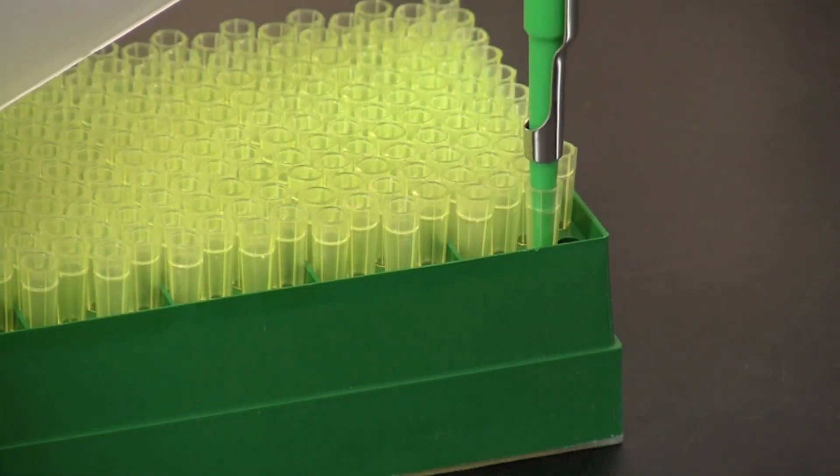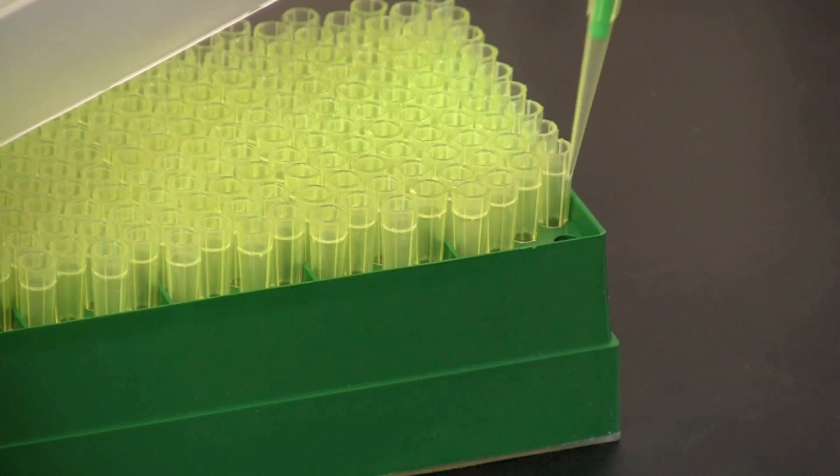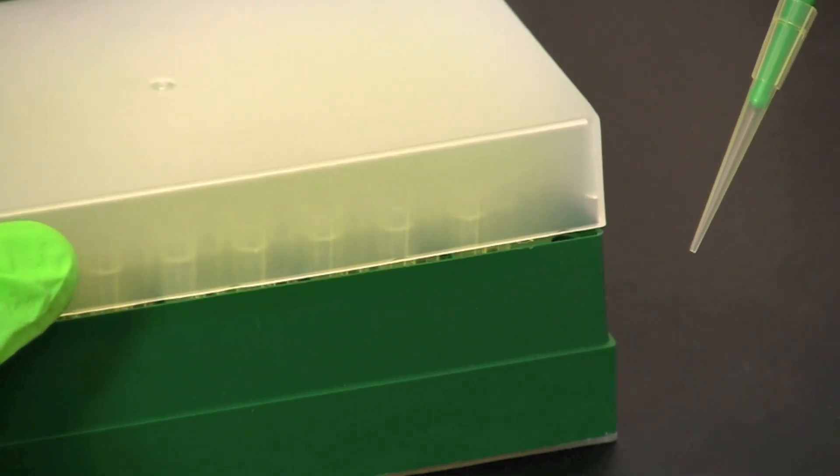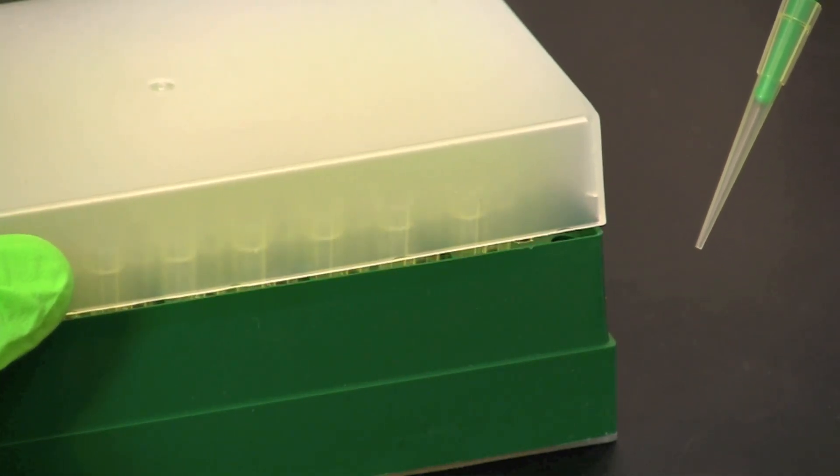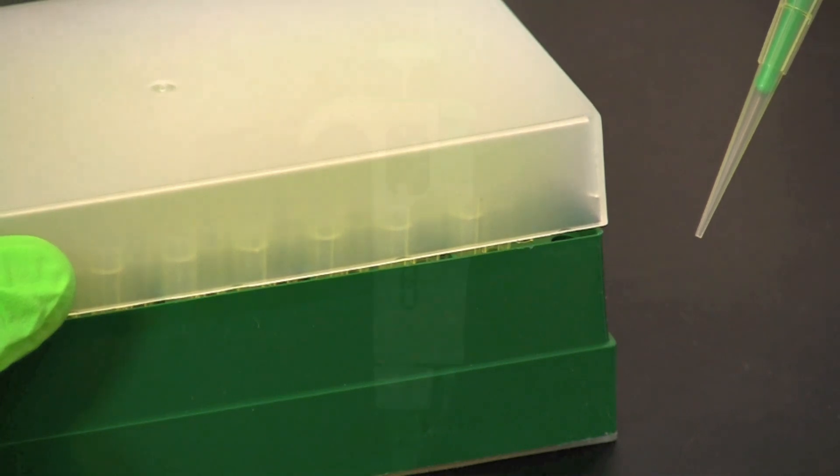After the correct volume has been set place a disposable tip onto the pipette. It is important to apply gentle but firm pressure so that a good airtight seal is made between the pipette and the tip.